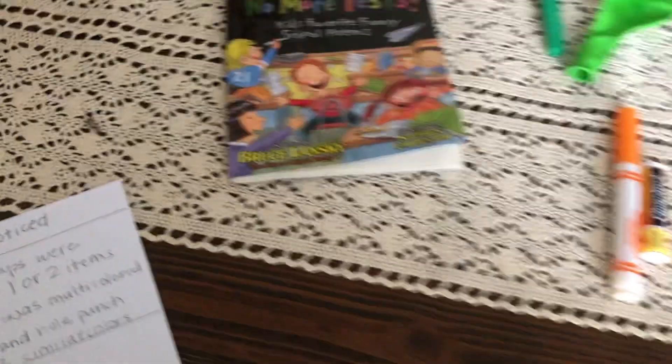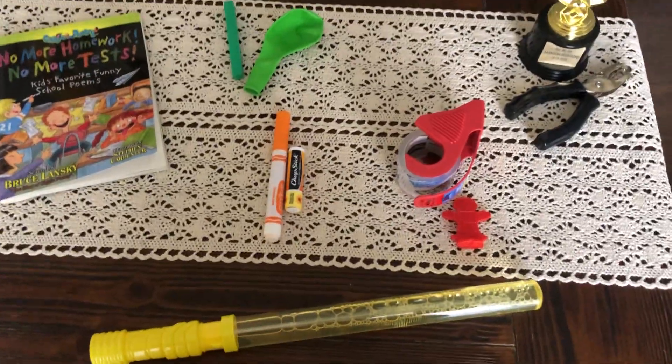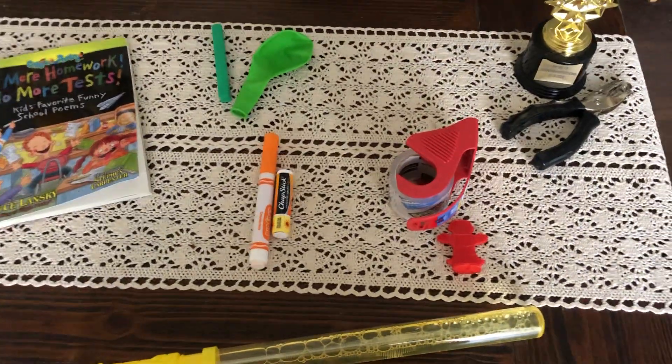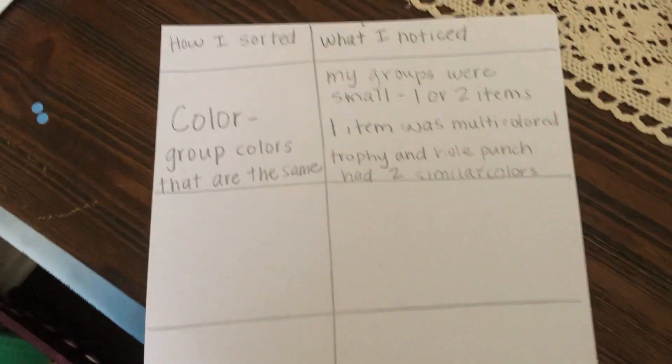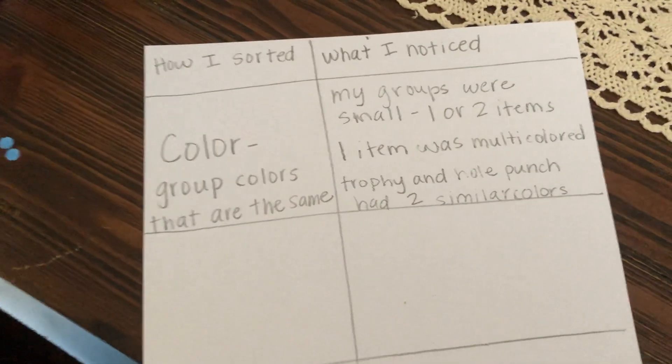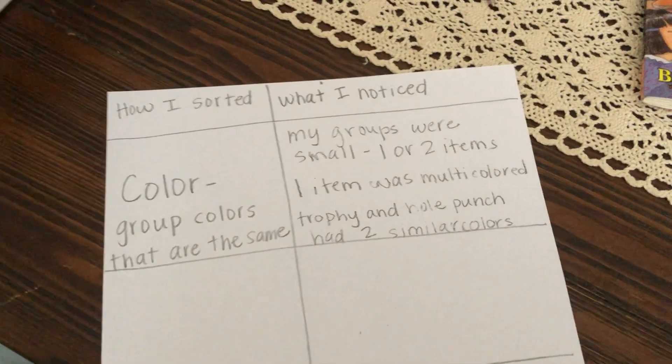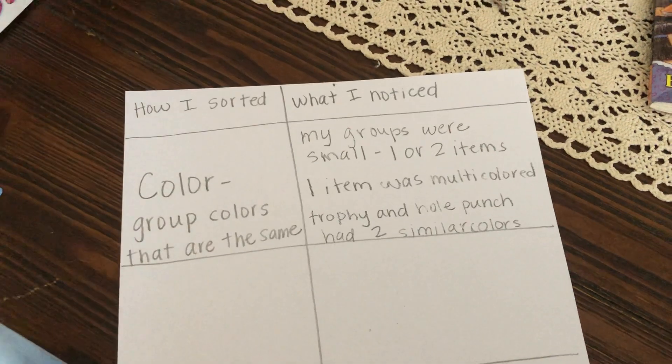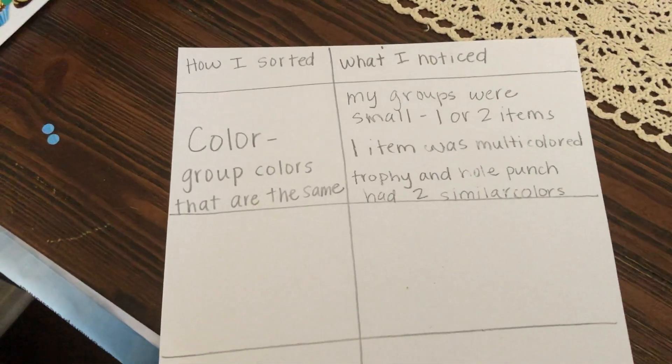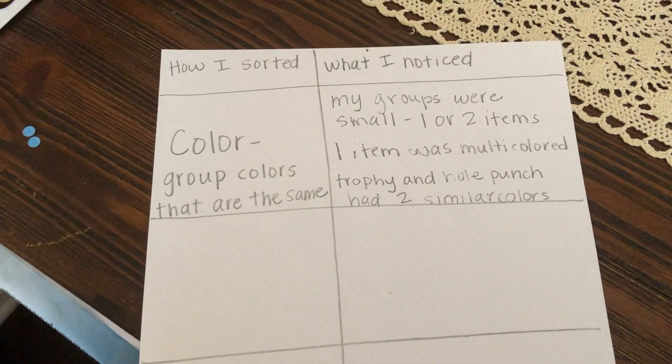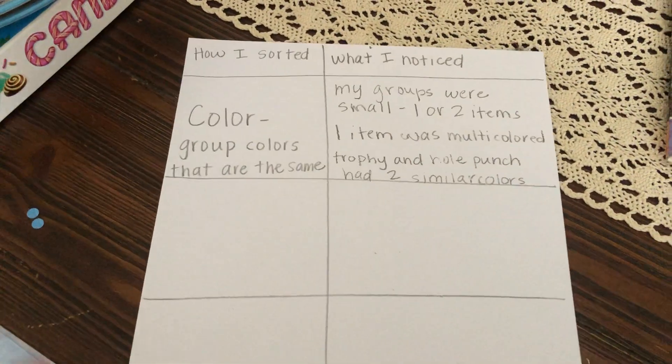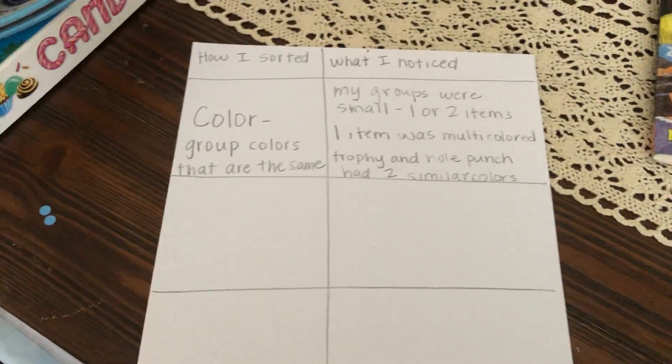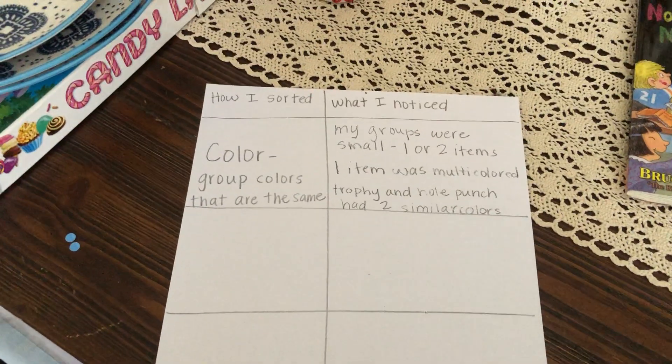So those were just some things that I noticed about my 10 objects that I gathered from around my house. Now what you're going to do is pick 10 items from around your house and think of a way to sort them. On your chart in your science journal or on a piece of paper, you're going to tell me how you sorted them and then what you noticed after you sorted them. And remember, you could do color like I did or you could sort your items in any other way that you can think of. I hope that you have fun sorting and make sure to add to your chart because this will be part of your formative assessment where I see the different ways you sorted and what you noticed. All right, I hope you guys have fun. Bye.